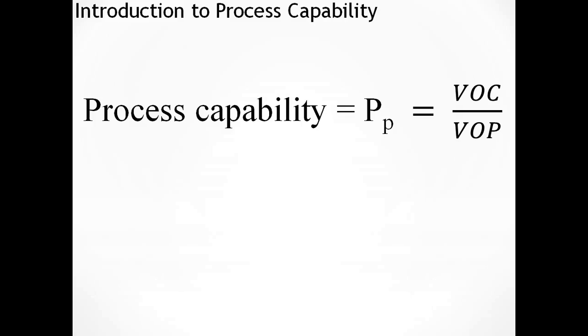If you like what you see, please hit the thumbs up or subscribe. In this video, we're going to be doing an example on process capability, but before we go into that, I'm just going to go through some of the terms used in process capability so we all have the same level of understanding when we start. Process capability equals PP and that equals the voice of the customer divided by voice of the process.